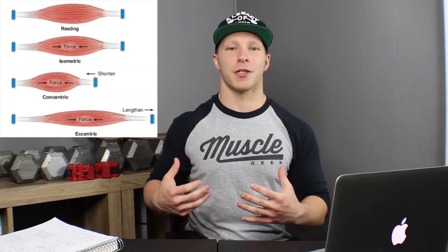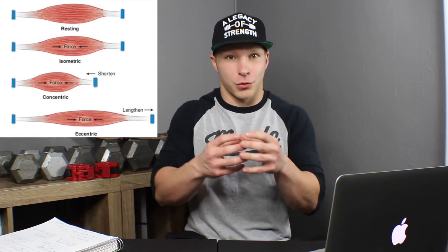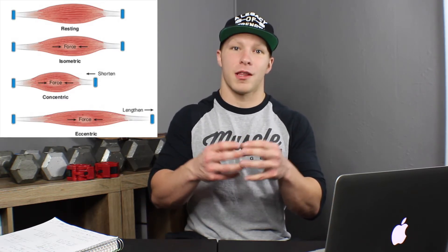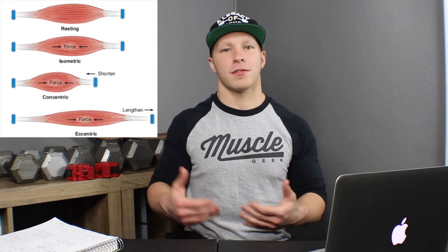So let's say we're doing a curl. As we're coming down into this negative portion, that's called the eccentric — you're coming down, eccentric. The concentric would be coming up. Isometric is where you're right in the middle and you're just holding it. You can also think of it this way: concentric — the muscle length shortens; eccentric — the muscle lengthens; and isometric — it stays the same.